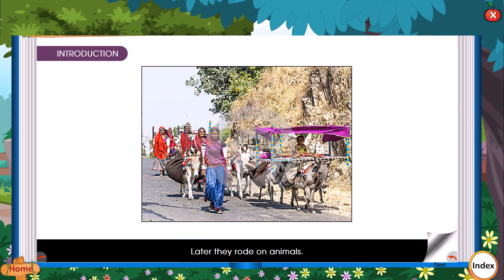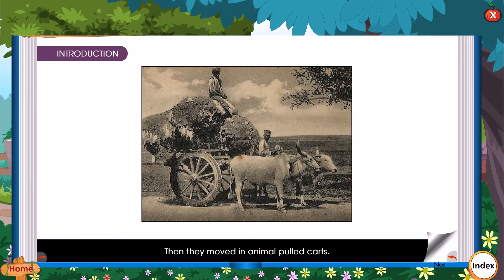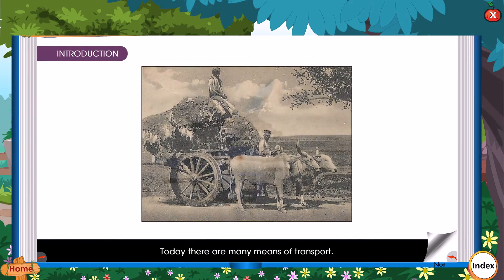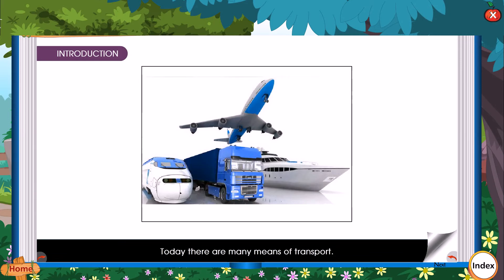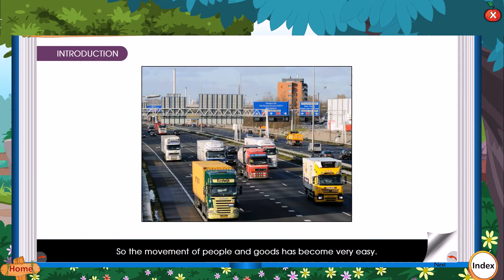Later, they rode on animals. Much later, they invented wheels. Then, they moved in animal-pulled carts. Today, there are many means of transport, so the movement of people and goods has become very easy.